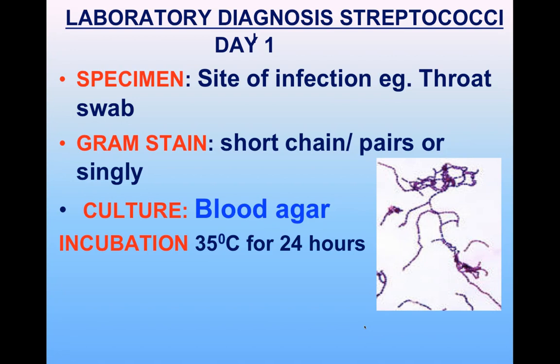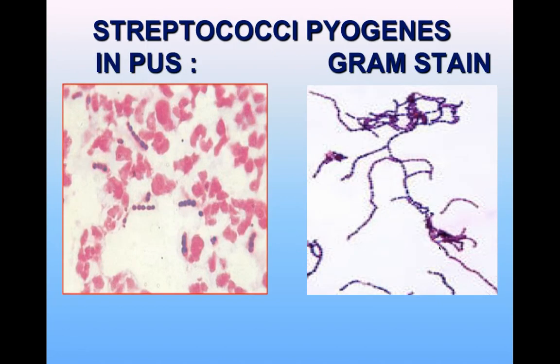For laboratory diagnosis, on Day 1 the specimen — a throat swab — is collected, gram staining is performed showing typical chains of gram-positive cocci, and the culture is plated on blood agar as streptococci are fastidious and require blood. The plate is incubated at 35°C for 18 to 24 hours.